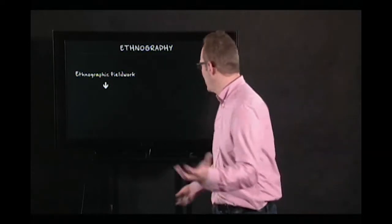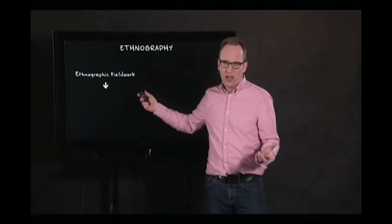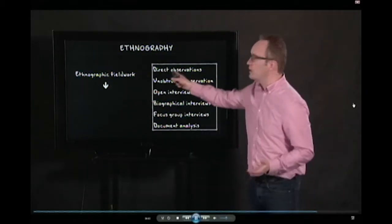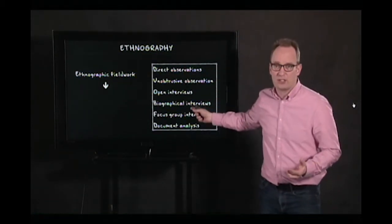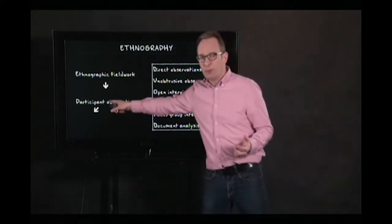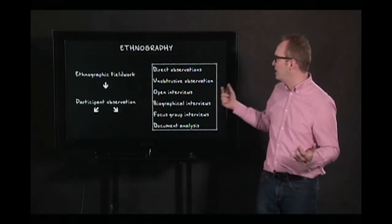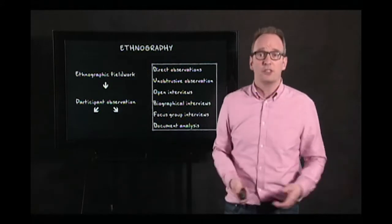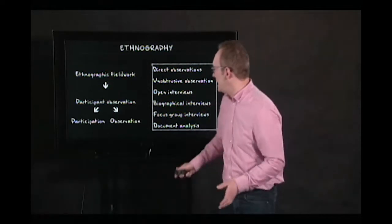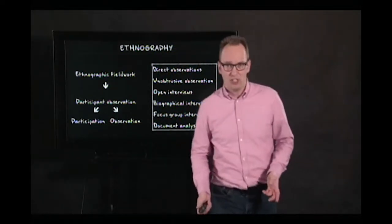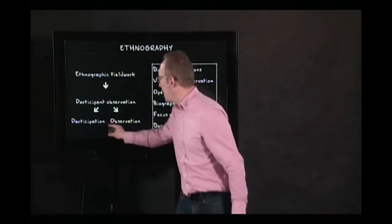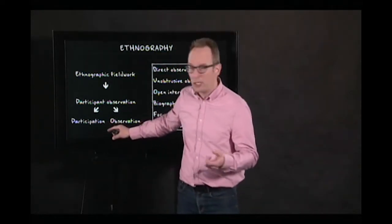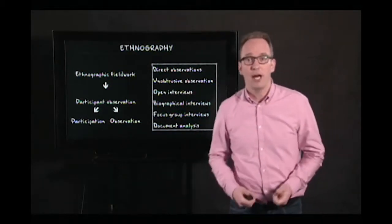So ethnography is a method — ethnographic fieldwork — consisting of all kinds of methods. Many people say participant observation, but it's more: direct observation, unobtrusive observations, interviews in all kinds of forms, and document analysis. The main part of participant observation is participation and observation, and in other lectures we'll discuss how to think about participation and observation.